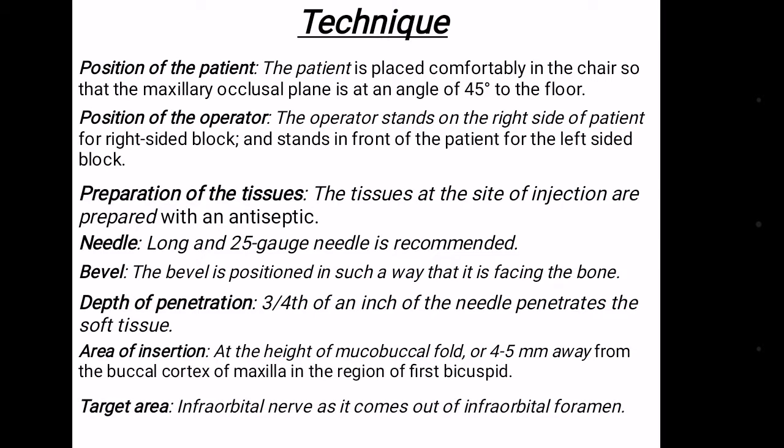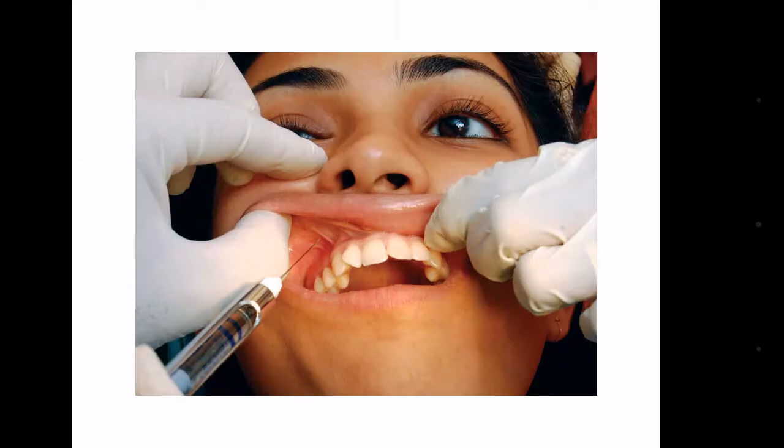The target area is the infraorbital nerve as it exits the infraorbital foramen. In this figure, the index finger is used to locate the infraorbital foramen, while the thumb retracts the cheek and lip. Injection is made at the mucobuccal fold near the first bicuspid.